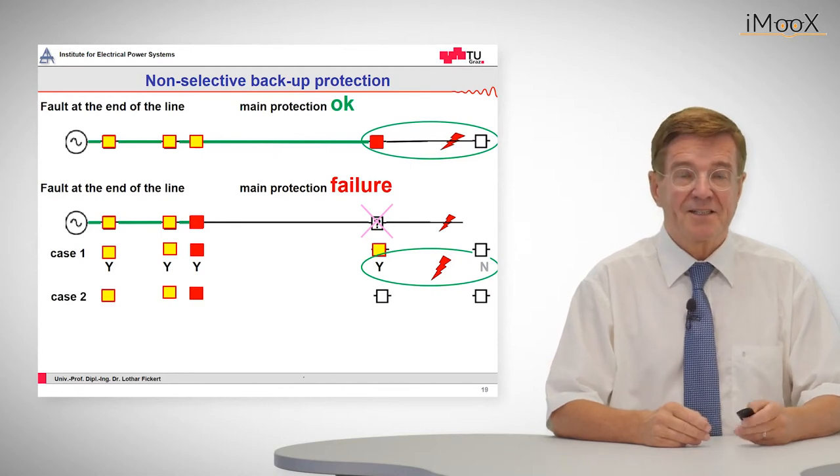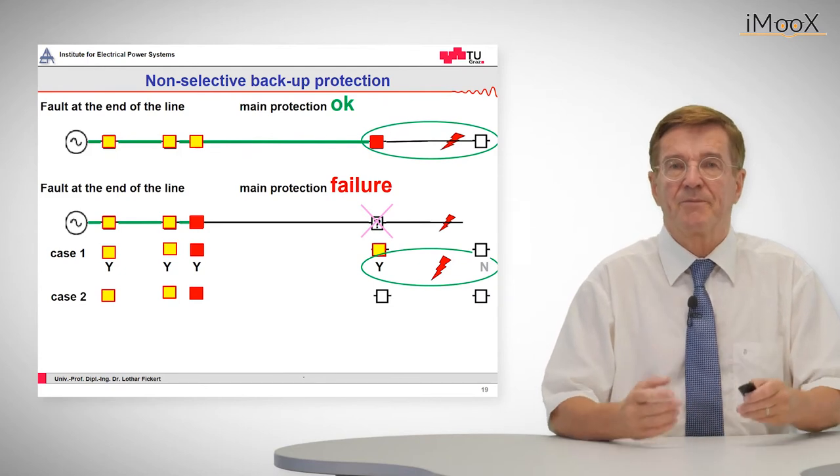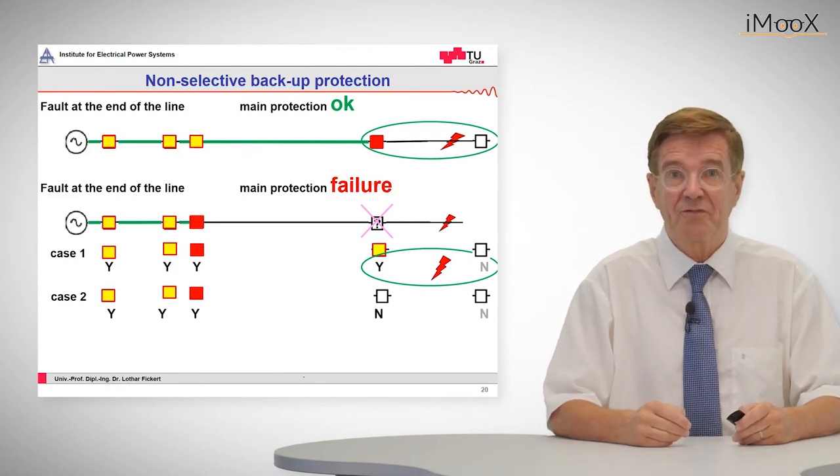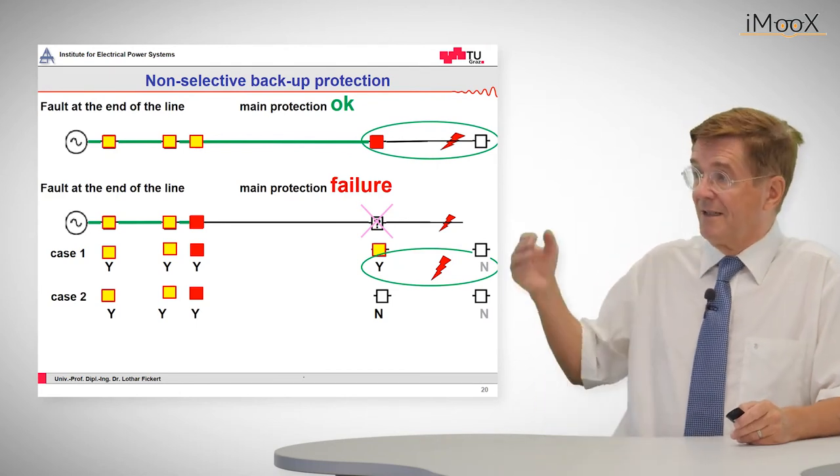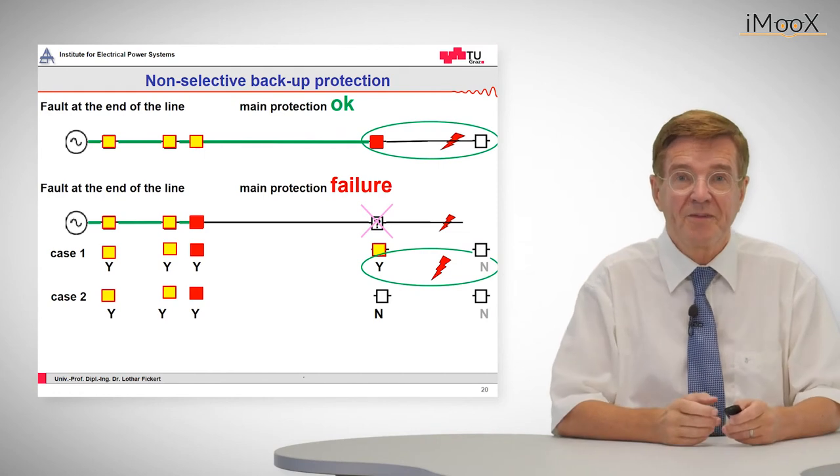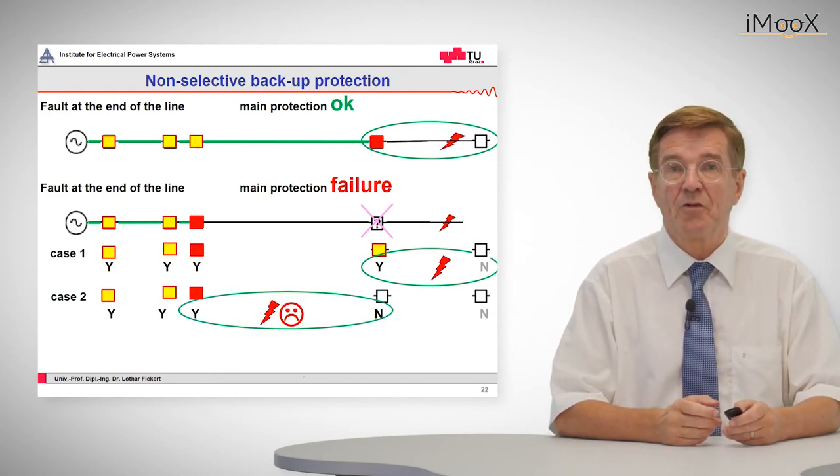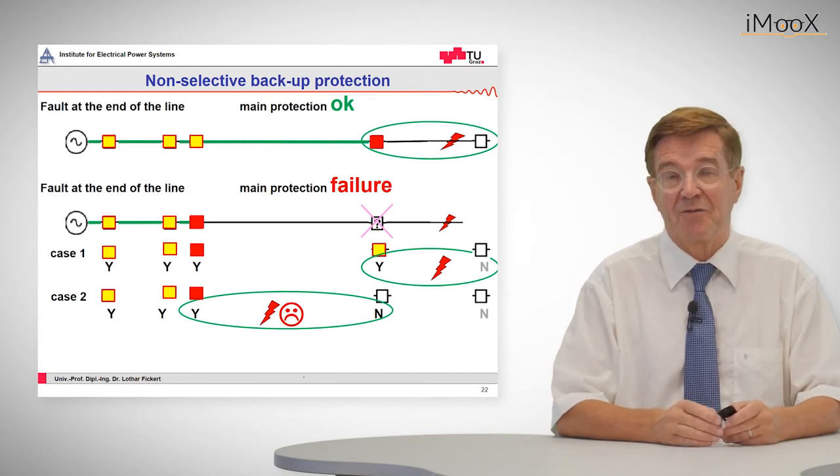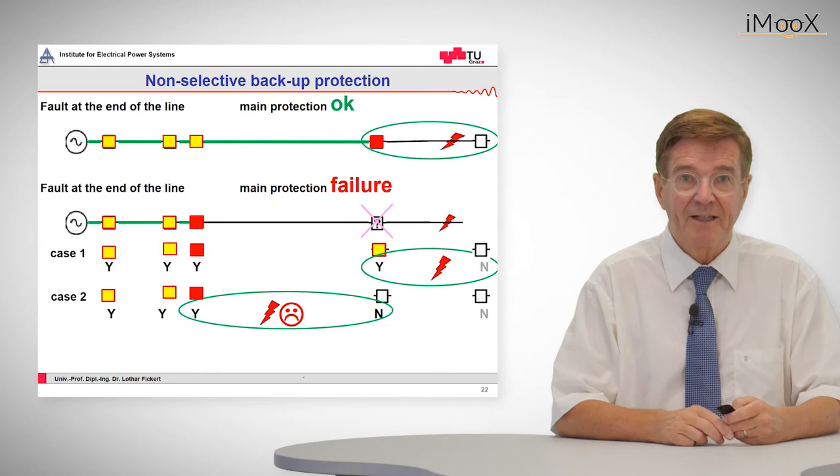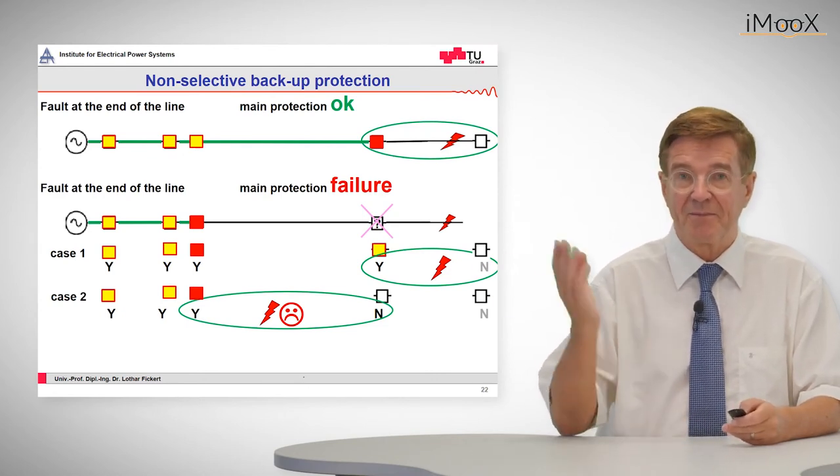The next may be case two where the relay does not react at all. There is no indication, no pick up, nothing. So in this case we have an indication for the control room like pick up, pick up, trip and nothing. From this it will be concluded by the operations people that the fault must be upstream of the last relay and that the fault should be in a section where it is not. Which is a wrong conclusion but which is correct by means of the indication.